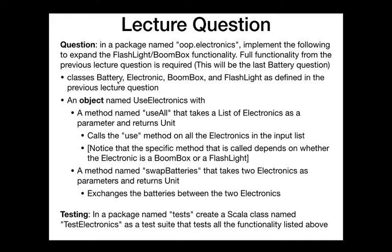All that functionality from the last lecture question — battery, electronic, boombox, flashlight. Electronic is an abstract class. Flashlight and boombox both extend that electronic class, and battery as it's been. What we'll want to add is an object named UseElectronics with two methods: one named useAll that takes a list of electronics and calls use on each, and one named swapBatteries that takes two electronics and switches their batteries by reference.